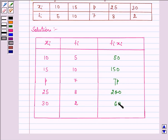Now let us find out the sum of frequency and the sum of the product of frequency with X. That is summation of frequencies is equal to 32 and summation of FI×XI is equal to 460 plus 7P.